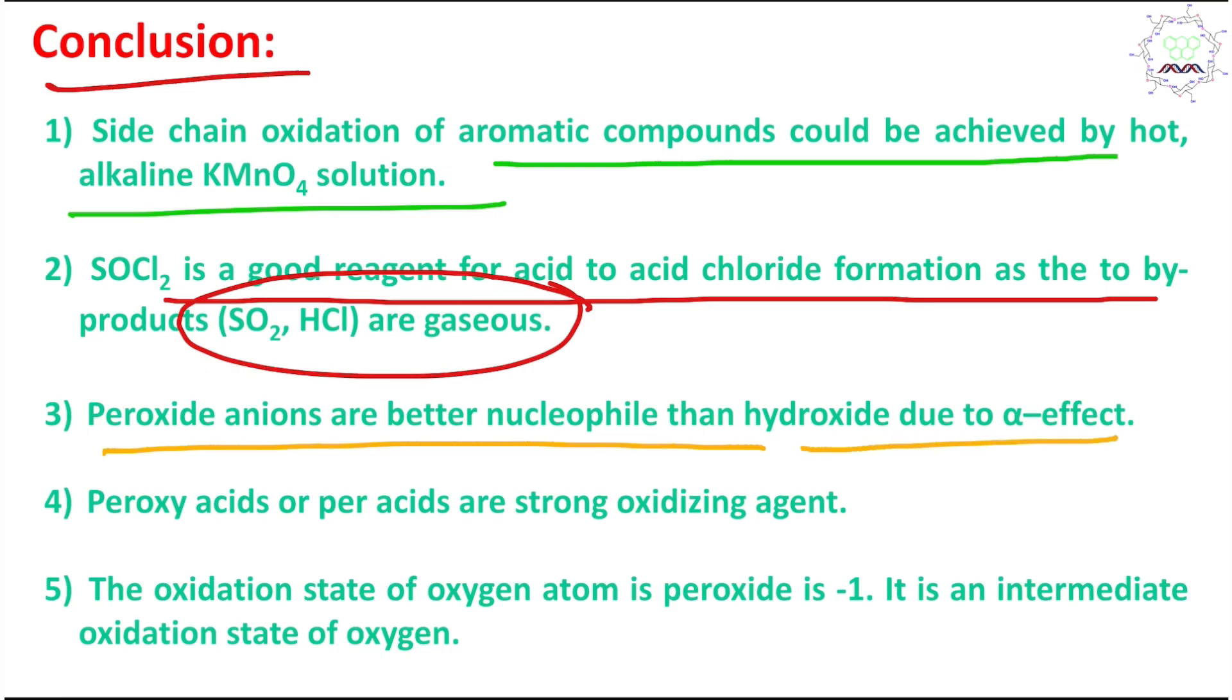Finally, the peroxy acids or peracids are strong oxidizing agents like alkene oxidation to corresponding epoxide. And finally, the oxidation state of the oxygen atom in peroxide is -1.